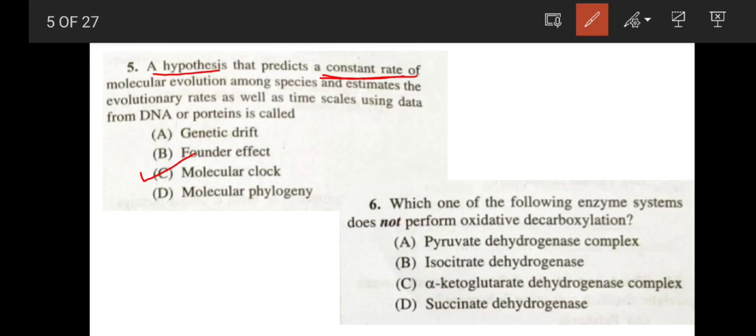Next, which one of the following enzyme system does not perform oxidative decarboxylation. See here pyruvate dehydrogenase complex converts pyruvates into acetyl-CoA and causes decarboxylation or release of carbon dioxide. So it cannot be your correct answer. Next, isocitrate dehydrogenase also converts isocitrate to alpha-ketoglutarate and releases carbon dioxide. So it also cannot be your correct answer. Next, alpha-ketoglutarate dehydrogenase complex converts alpha-ketoglutarate into succinyl-CoA and releases carbon dioxide. So it cannot be your correct answer. Next, the last option succinate dehydrogenase. It converts succinate to fumarate and during that process it converts FAD to FADH2 without releasing any kind of carbon dioxide. So this is not an oxidative decarboxylation step. So your correct answer is option D.